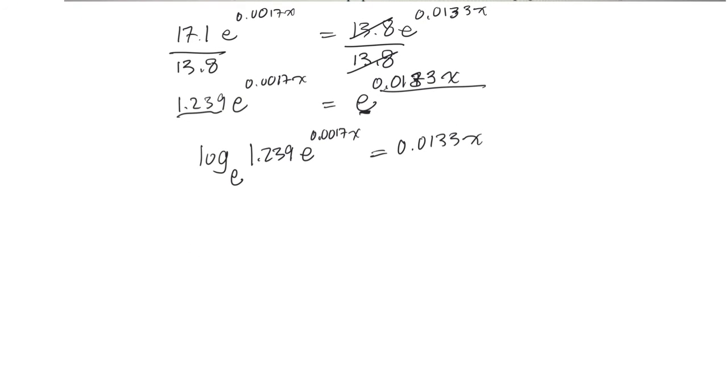So log base e of 1.239e to the 0.0017x is equal to the exponent 0.0133x. Okay, but now I've got a product here. So this number times this thing. So if it's a product, I can use the product rule to expand that. Log base e of 1.239 plus log base e of e to the 0.0017x. And that's equal to 0.0133x.